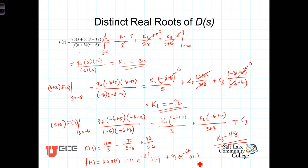We include the u(t) terms to explicitly indicate that this expression is only valid for t greater than or equal to 0. Prior to t equals 0, before the switch, everything would have been 0 or accounted for in the initial conditions. So the process is: analyze a circuit in terms of Laplace variables, come up with an expression for a voltage or current, use partial fraction expansion to identify individual fractions, and transform back into the time domain to get the time domain response.